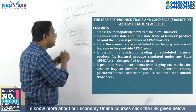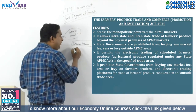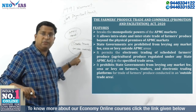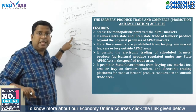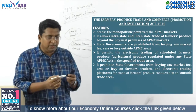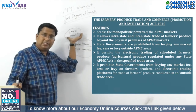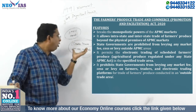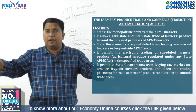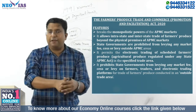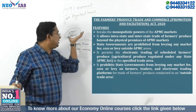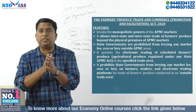In these trade areas, private markets will come up alongside the existing APMC markets. Earlier, the farmer could only sell to the APMC market. Now farmers have the option to sell to either the APMC market or to private markets created under the new central law, giving the farmer freedom of choice. If the farmer is getting a better price in the private market, they can sell there; if in the APMC mandi, they can sell there.